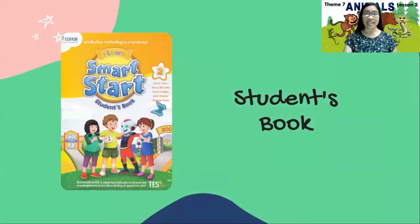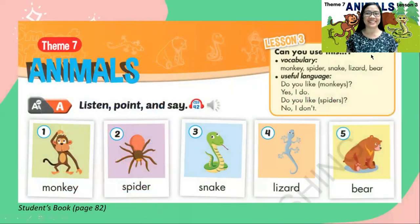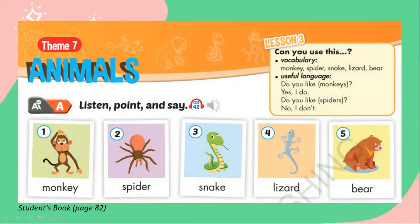Take out your student's book and open it on pages 82 to 83. Listen very carefully! Theme 7, Animals, Lesson 3 A. Listen, Point and Say.